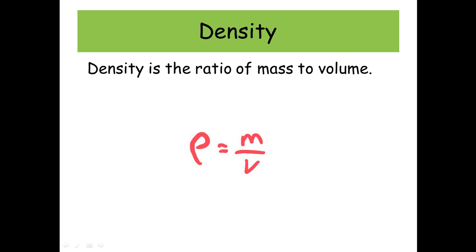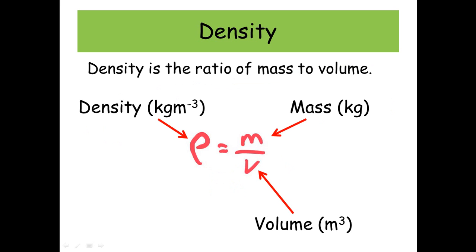And here we've got our equation to calculate density. Density, with the symbol rho, is measured in kilograms per meters cubed. And to find out what density is, what the value of density is, we'll take the mass of an object in kilograms and divide it by the volume of the object in meters cubed.